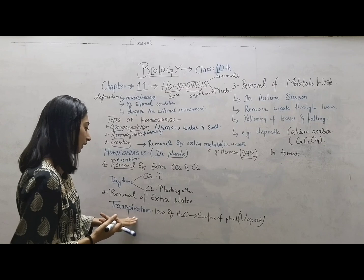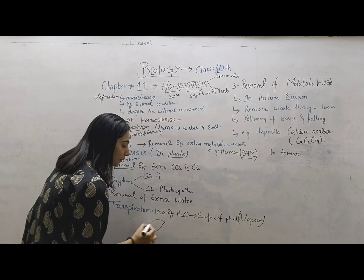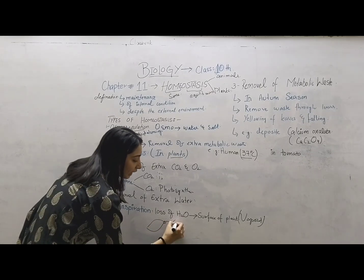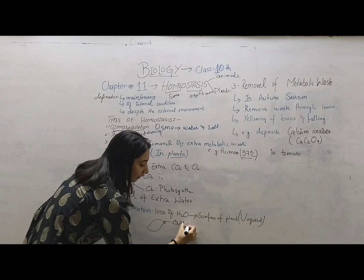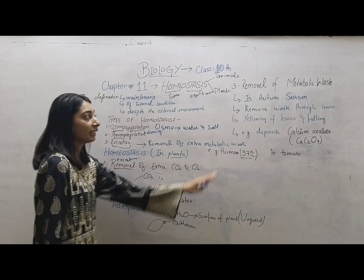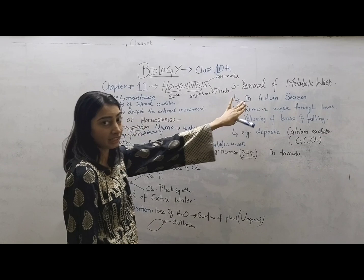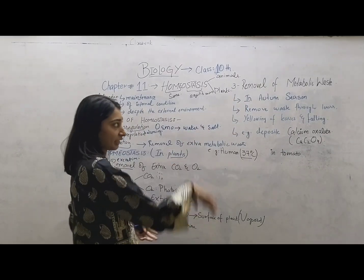Water can also be removed from the tips of leaves, which is called guttation. Guttation is the removal of metabolic waste in liquid form. This is also a form of excretion, where the removal of waste is excretion.